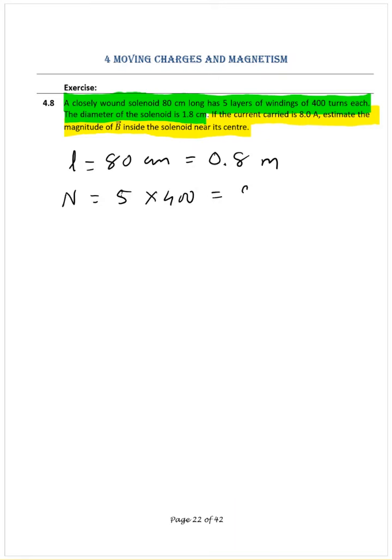Diameter we are given 1.8 centimeters, that is 0.018 meters. If needed somewhere, I don't think it will be needed. Current passing through the solenoid is 8 amperes. Now to find out the magnetic field.